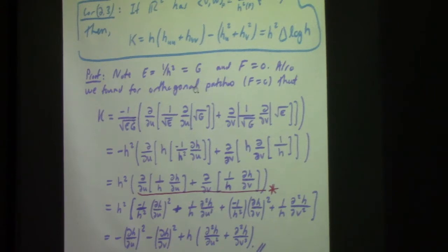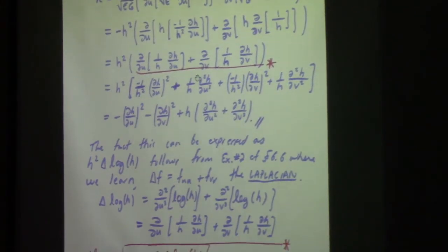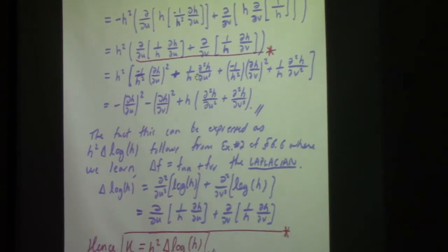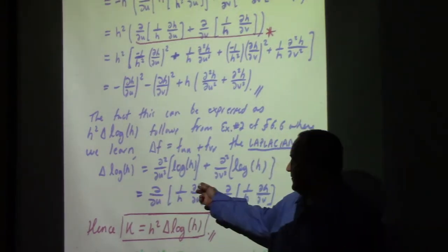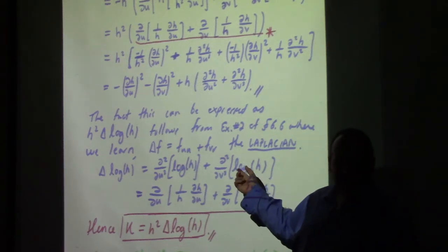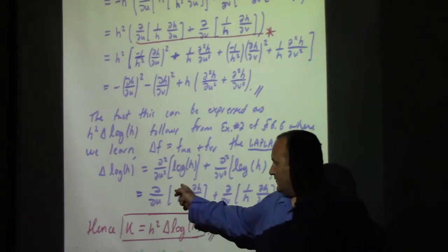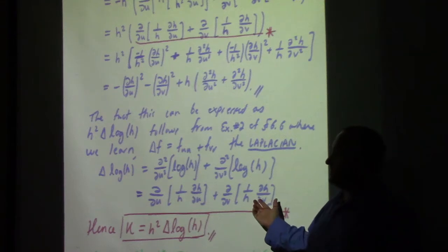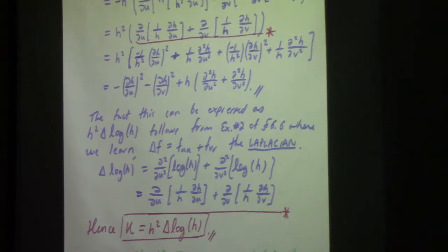It would be instructive to go back to the Poincaré plane, find a frame field on it, and go through the calculus and see how it works. The Laplacian is the second partial of the variable squared plus the second partial of the other variable — the sum of second derivatives of the function. When you take second derivatives of the log, you get derivatives of 1/H times that, and the product rule picks up those two terms.